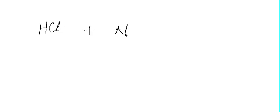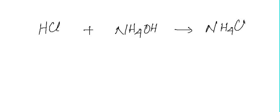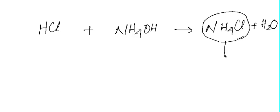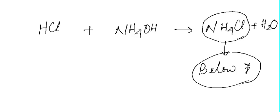Some salts are made from a strong acid like HCl and a weak base like ammonium hydroxide, giving ammonium chloride plus water. When ammonium chloride undergoes hydrolysis, the pH of the solution will be below 7, which means the solution is acidic in nature.